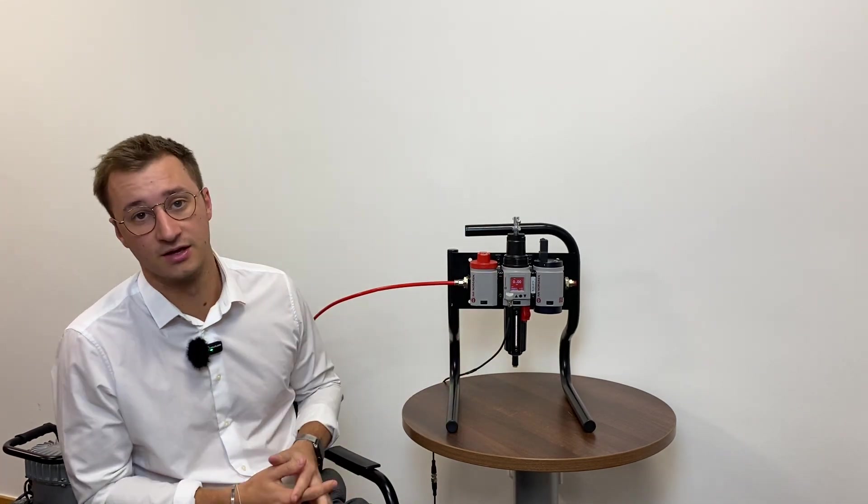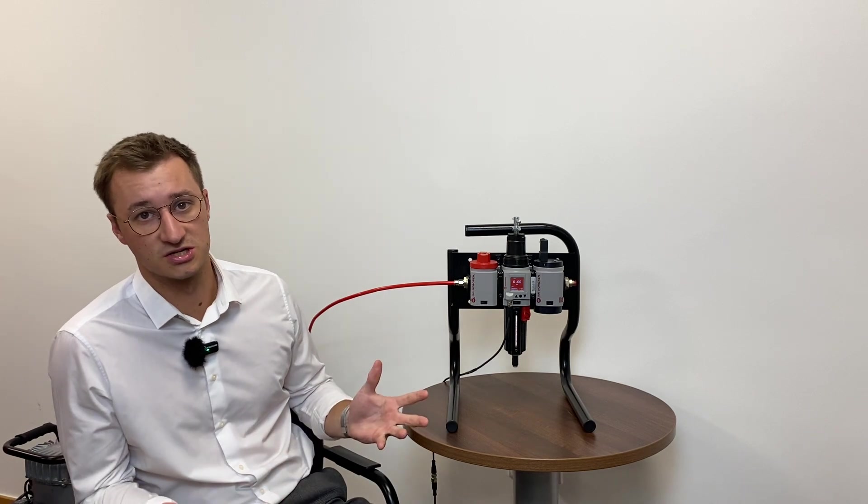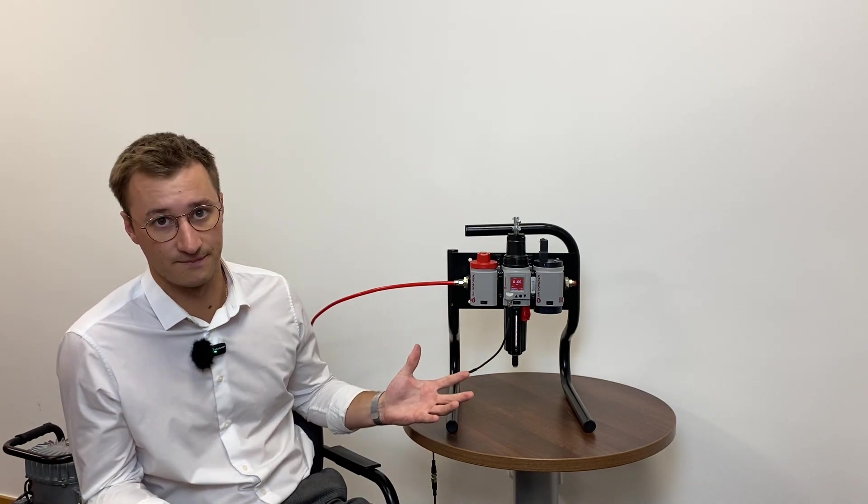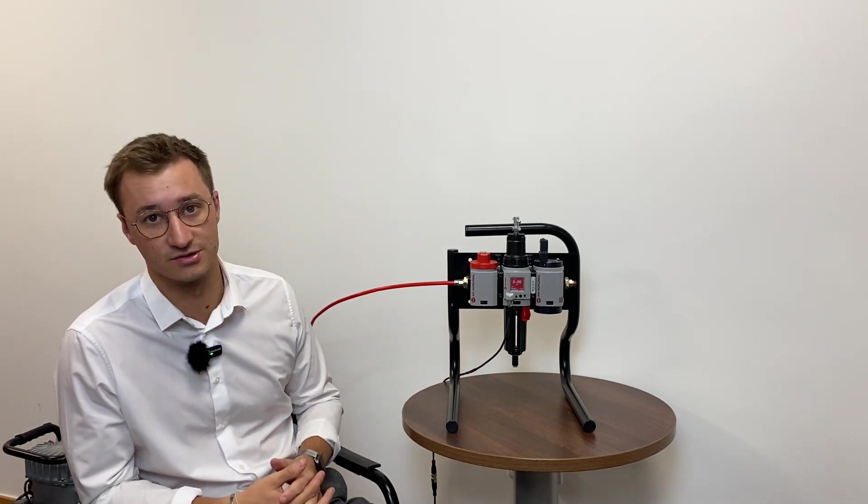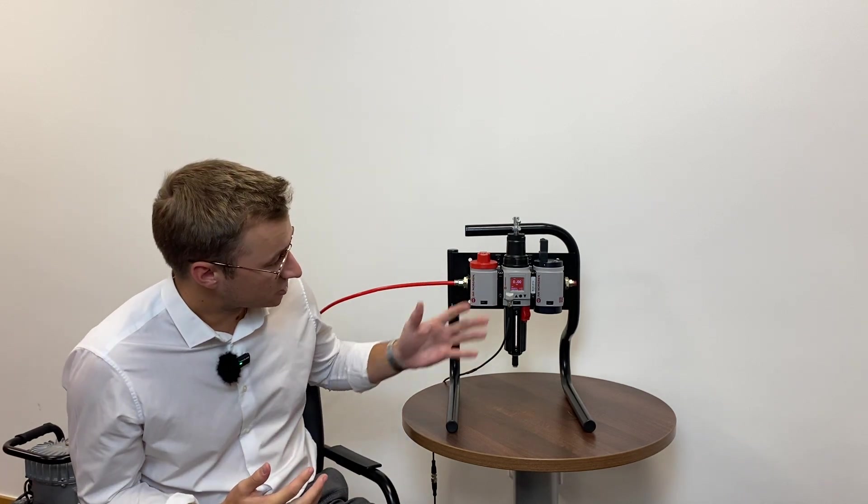As you can see, currently it's showing red. This means the pressure is outside the tolerance set. Obviously right now we've got no air running through it, so it shows zero, and I'm going to show you now how you can change that set point.